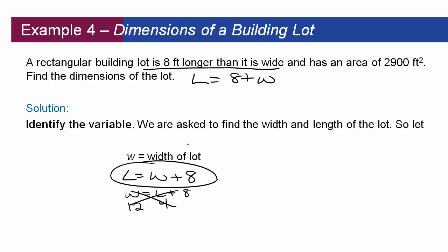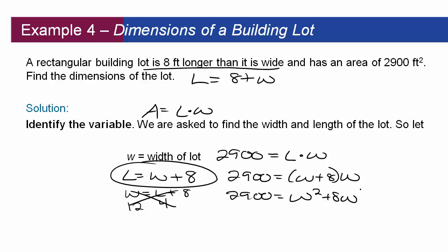Has an area of 2900. Well what do we know about area? Area is length times width. So 2900 has to equal length times width, but we don't want an equation with two variables so let's substitute. Equals w plus 8 times w, because by substitution here, so 2900 equals w squared plus 8w.